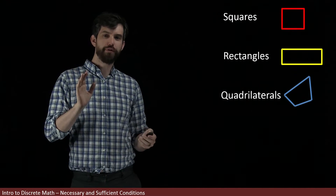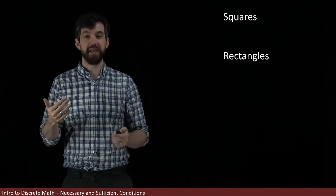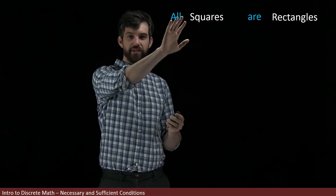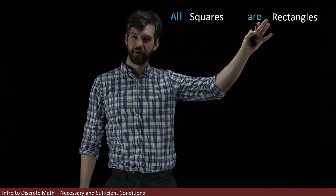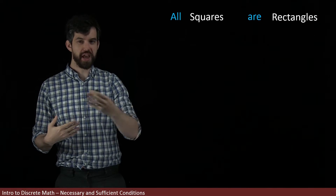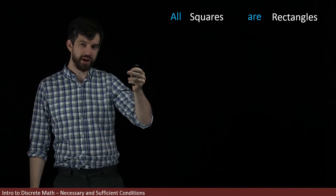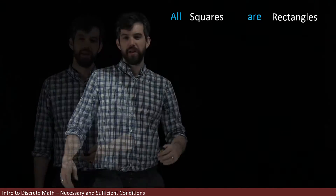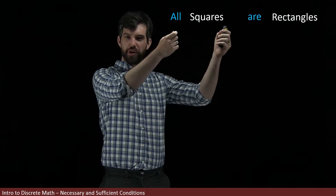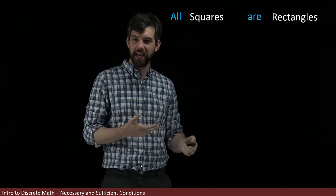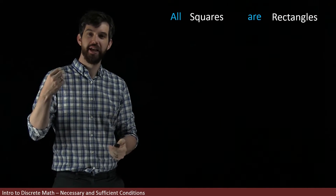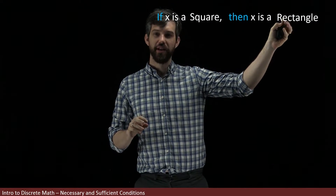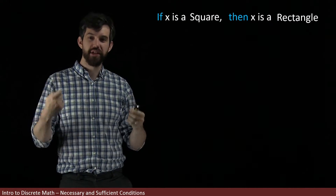Let's focus for a moment just on squares and rectangles, because we know there's a relationship between those two. In particular, all squares are going to have to be rectangles. Notice that this doesn't work the other way around — not all rectangles are squares. We can write this more precisely as a conditional statement: if x is a square, then x is going to be a rectangle.